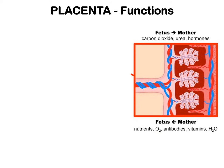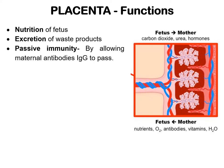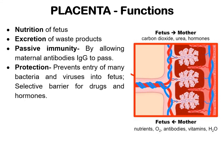The placenta has several functions. It provides oxygen and nutrition to the fetus and thus facilitates its growth. It also facilitates the excretion of fetal waste products like urea, uric acid, creatinine, and carbon dioxide. It provides passive immunity to the fetus by allowing the passage of maternal IgG antibodies. It also protects the fetus by preventing the entry of certain bacteria and viruses, and acts as a selective barrier for certain drugs and hormones.